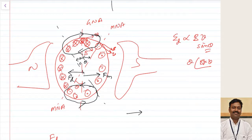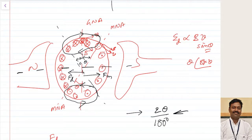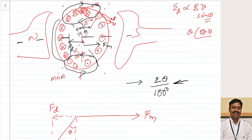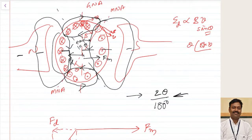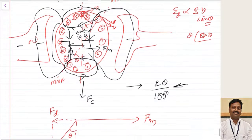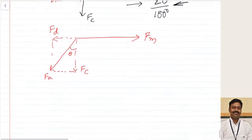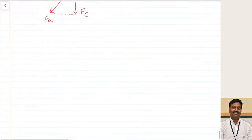That is why those conductors are responsible for the demagnetizing effect. The number of conductors responsible for demagnetizing is those lying within 2θ out of 180 degrees, since between two poles the electrical angle is 180 degrees. The remaining conductors produce a field perpendicular to the main field and are responsible for the cross-magnetizing effect. So out of all conductors, those in 2θ out of 180 degrees contribute to demagnetizing, and the rest contribute to cross-magnetizing.